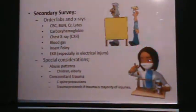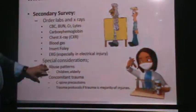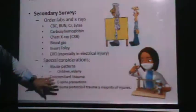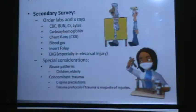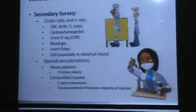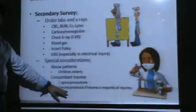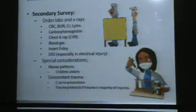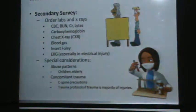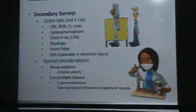We insert a Foley catheter, check if airways are open, and assess cardiac function. We also consider possible abuse patterns, check for trauma, and see if C-spine stabilization is needed. A rapid trauma assessment should be conducted to check for broken bones, bruises, and other problems.